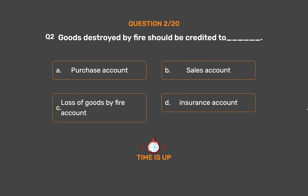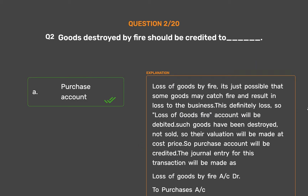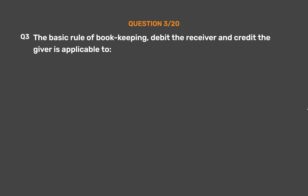The correct answer is option A: purchase account. Loss of goods by fire — it is possible that some goods may catch fire and result in loss to the business. This is definitely a loss, so loss of goods by fire account will be debited. Such goods have been destroyed, not sold, so their valuation will be made at cost price. Therefore, purchase account will be credited. The journal entry will be: Loss of Goods by Fire A/C Dr. to Purchases A/C.